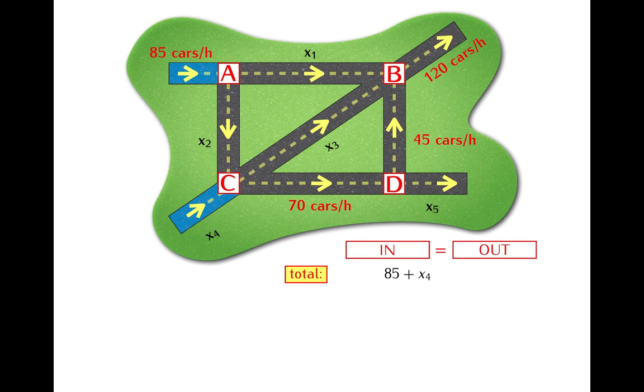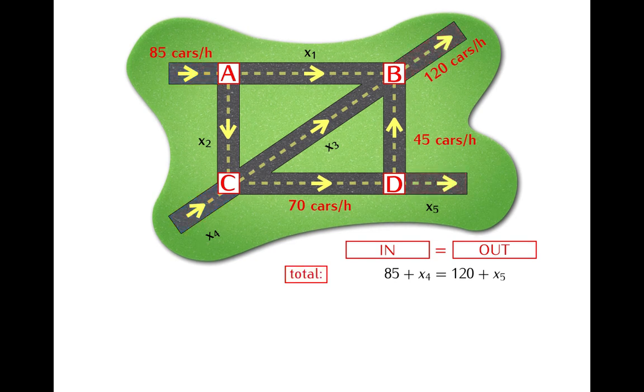On the other hand, we also have two streets via which traffic leaves the network. The street leading from the intersection B carries 120 cars per hour and the street leading from the intersection D carries x5 cars per hour. So all together there are 120 plus x5 cars per hour leaving the network. Next we need to have a look at what happens at each intersection.